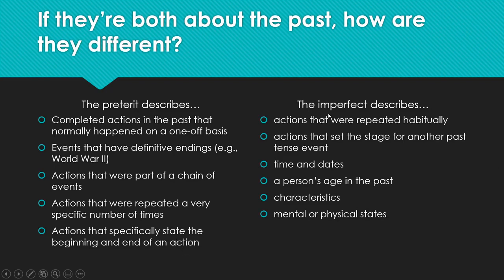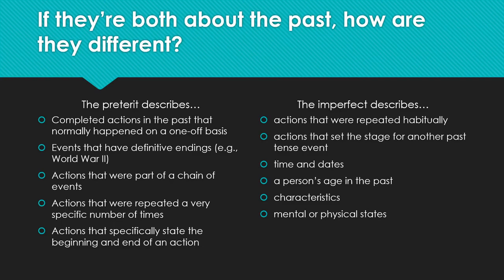The imperfect, on the other hand, describes actions that were repeated habitually or several times over a period of time. It also describes actions that set the stage for another past tense event — for example, 'cuando era niño' (when I was a kid) uses the imperfect 'era.' But whenever I say 'I went to a concert,' that specific one-time event would be 'yo fui' — the preterite.